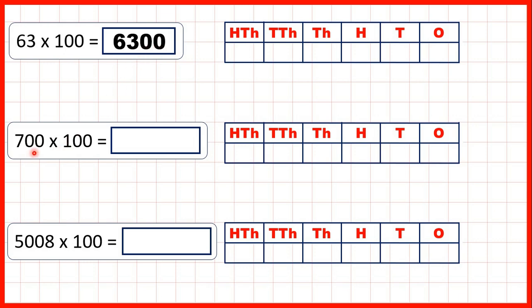Now what is 700 times 100? That's 70,000, so 700 with two zeros on the end, and that's because 700 times 1 is 700, so 700 times 100 is 70,000.